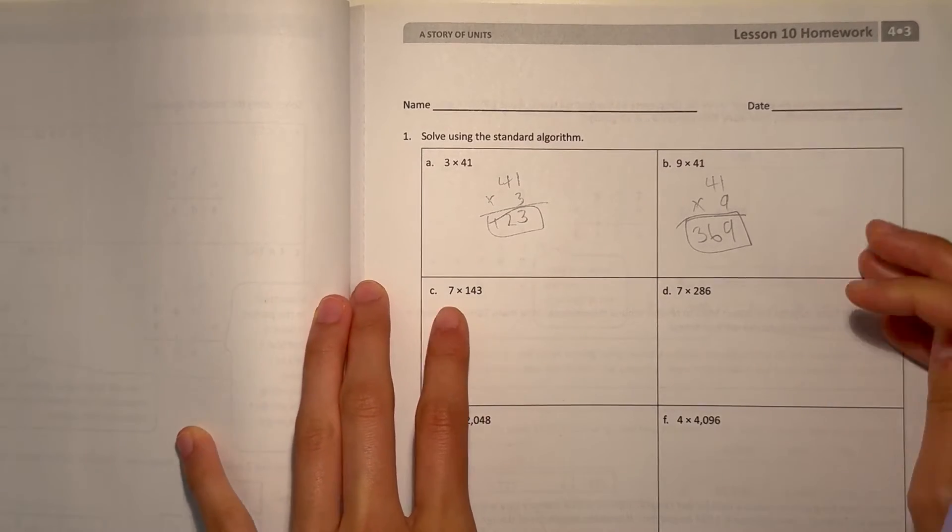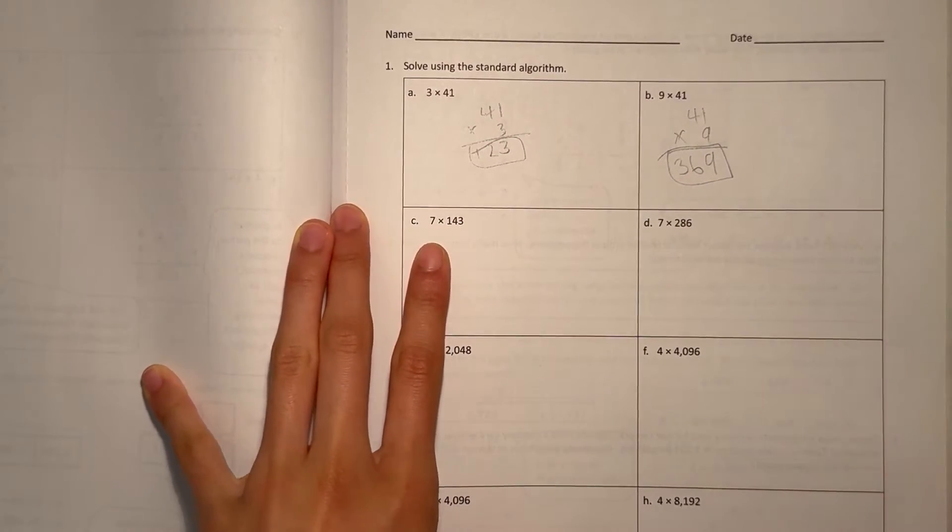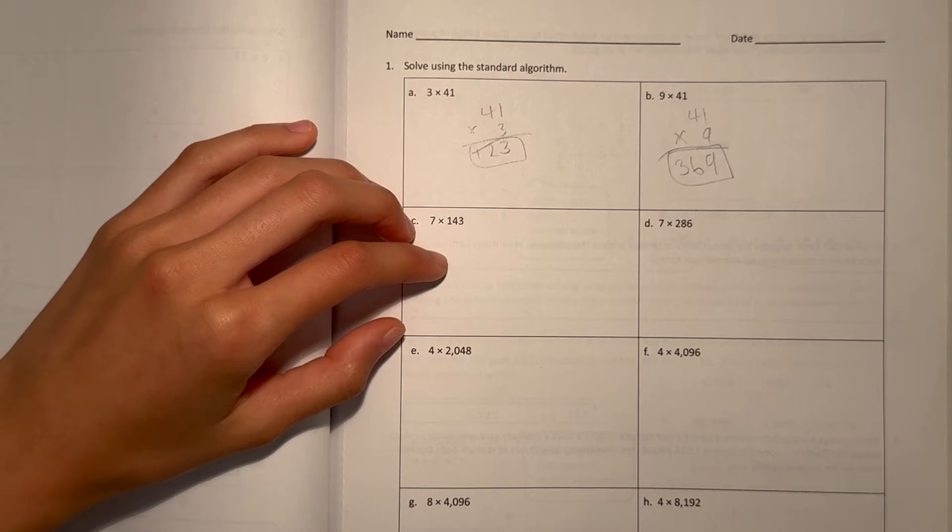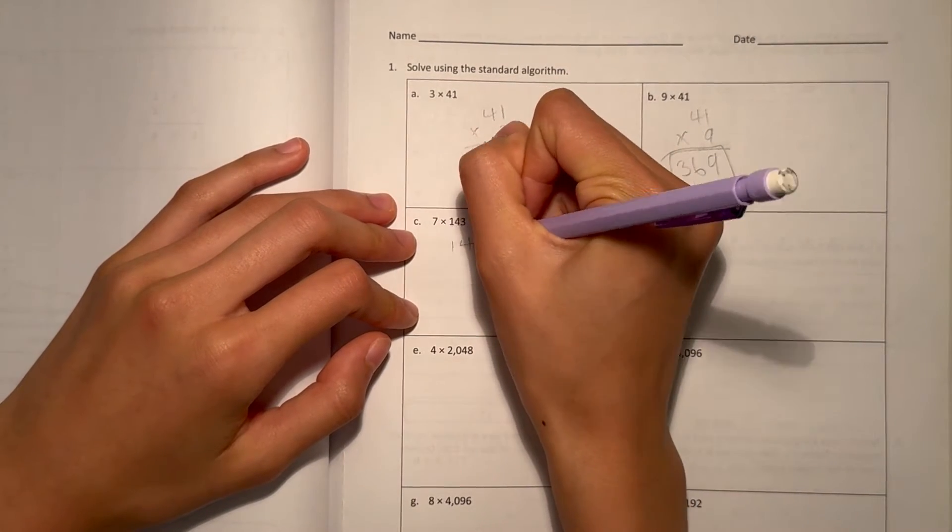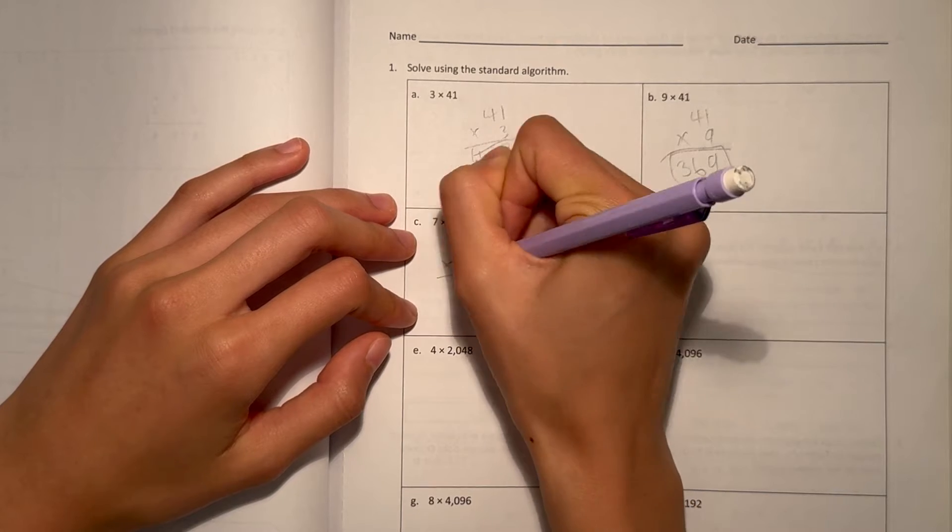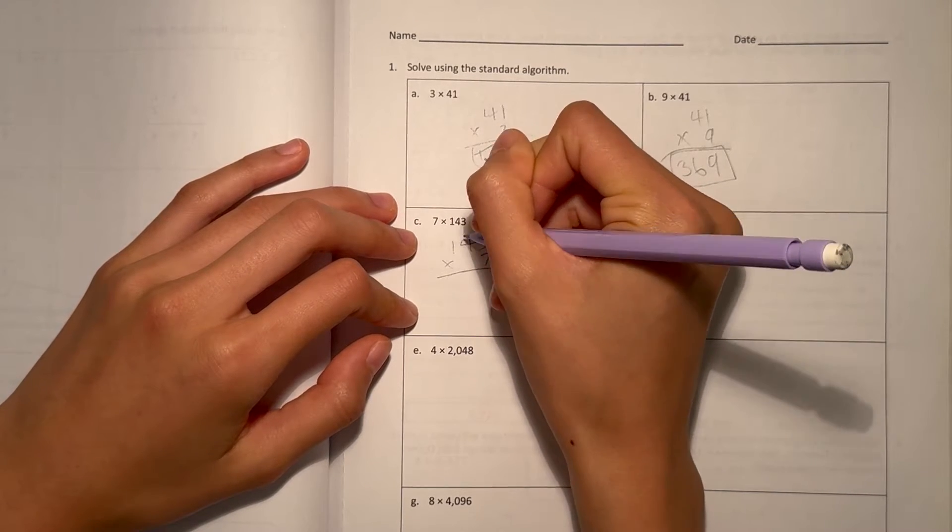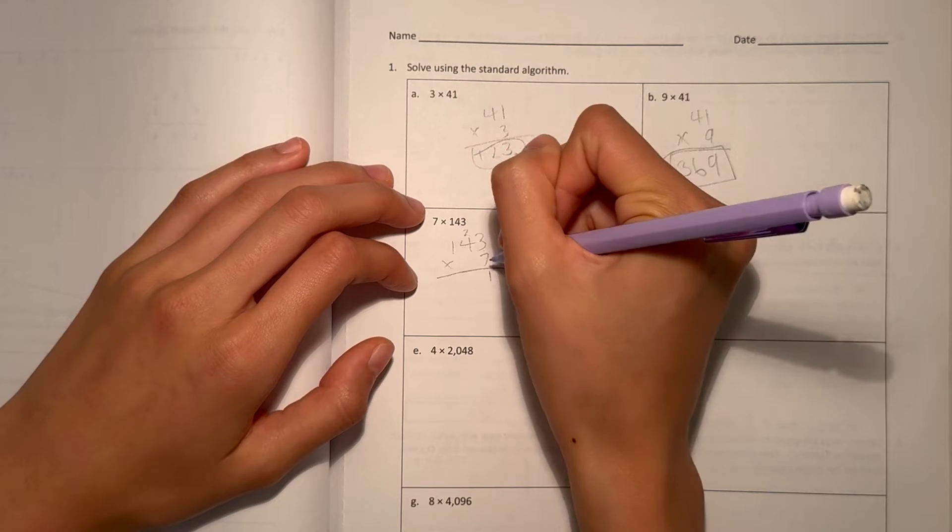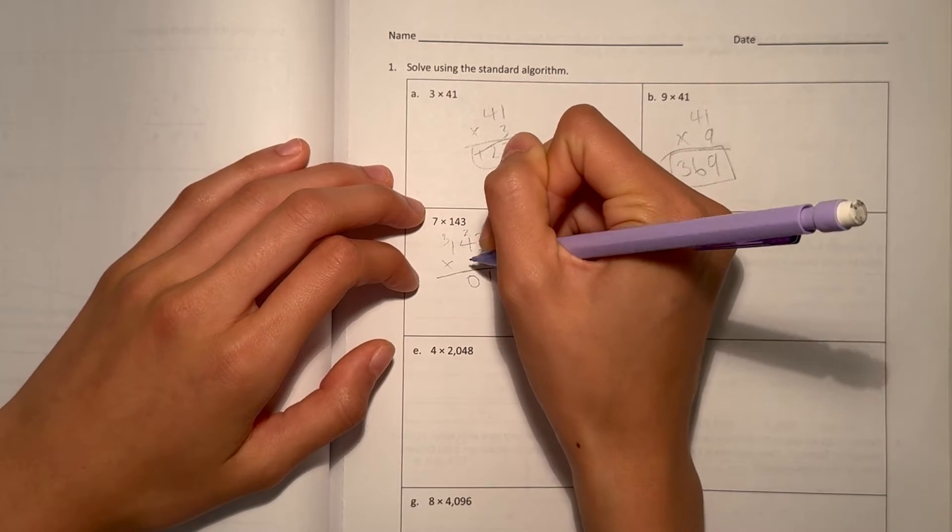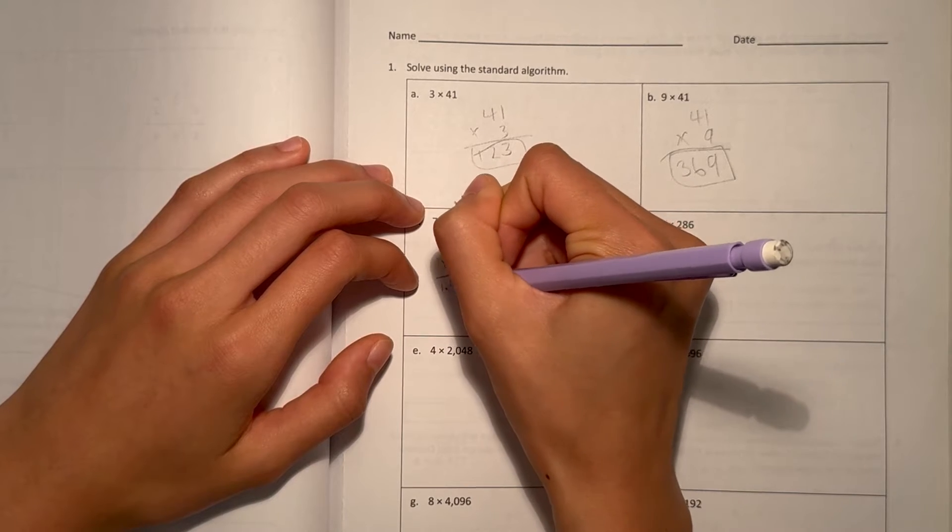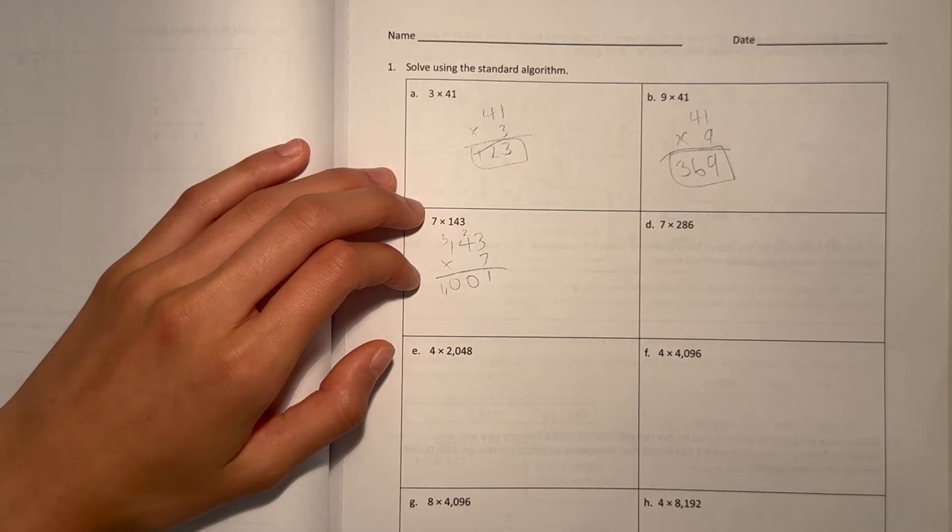C, 7 times 143. I don't know about you guys, but I prefer the bigger number on top. So I'll rewrite it as 143 times 7. 3 times 7 is 21. 4 times 7 is 28, plus 2 is 30. And 1 times 7 is 7, plus 3 is 10. So 1,001.